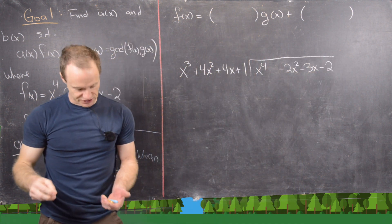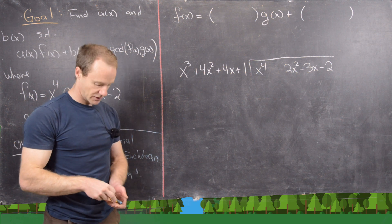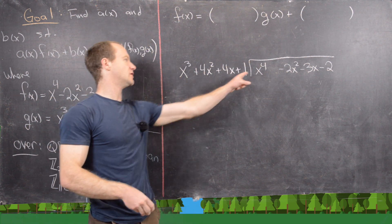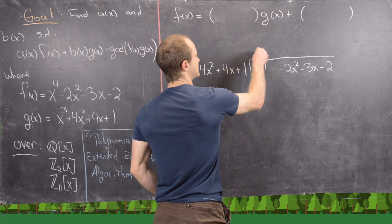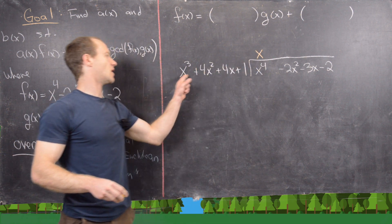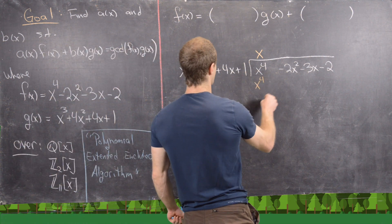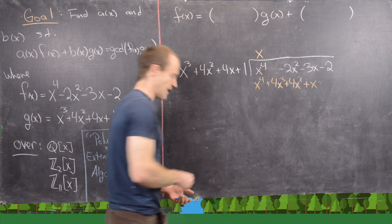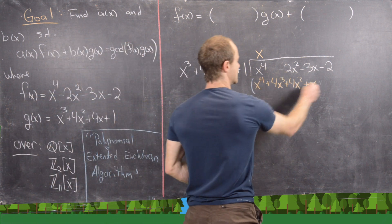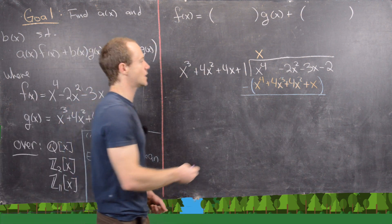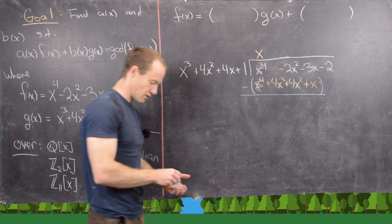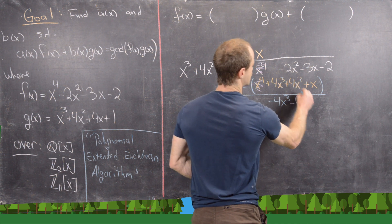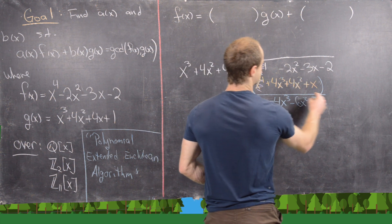I've left a little hole for the x³ term in f(x), which is helpful for bookkeeping. First, we ask what we multiply by x³ to get x⁴ — clearly just x. Distributing x gives x⁴ + 4x³ + 4x² + x. Now we group and subtract: the leading terms cancel, leaving −4x³ − 6x² − 4x.